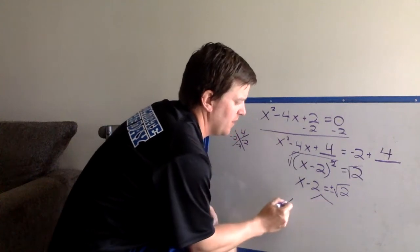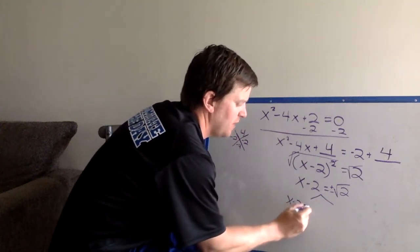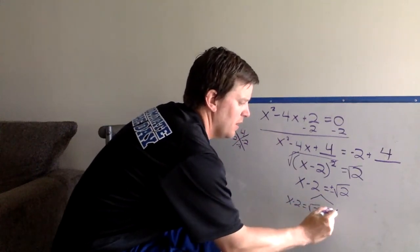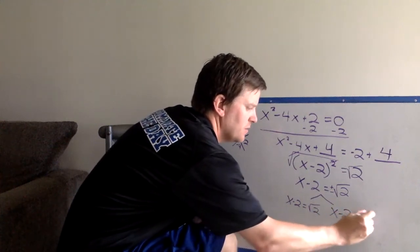So now if we split it, we have x minus 2 equals positive square root of 2, and x minus 2 equals negative square root of 2.